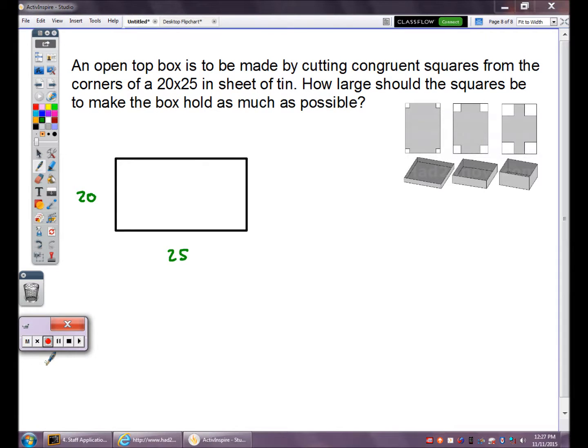Here's my sheet of tin, 20 by 25. I'm going to cut these pink squares out of each corner. I don't know how big to make them. Let's call them X by X. If they're a square, they have the same dimension. Once I cut these squares out, I'm going to be left with something like the top right. I have little tiny squares, medium squares, or big squares. The bigger the square, the taller my box is. But I might be losing volume if I make a box that's too tall.